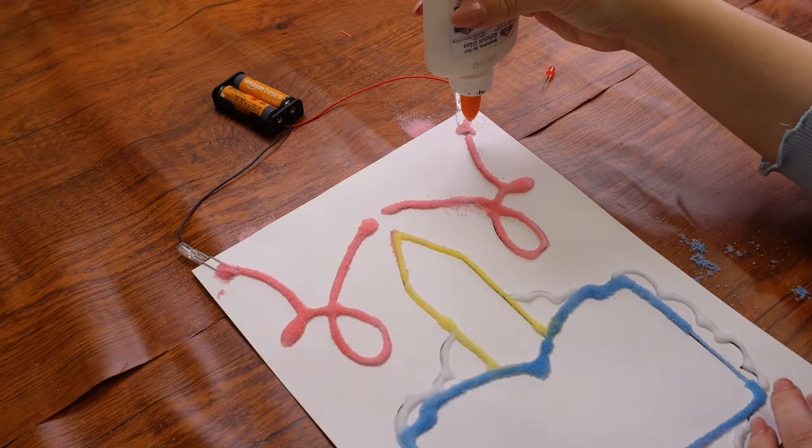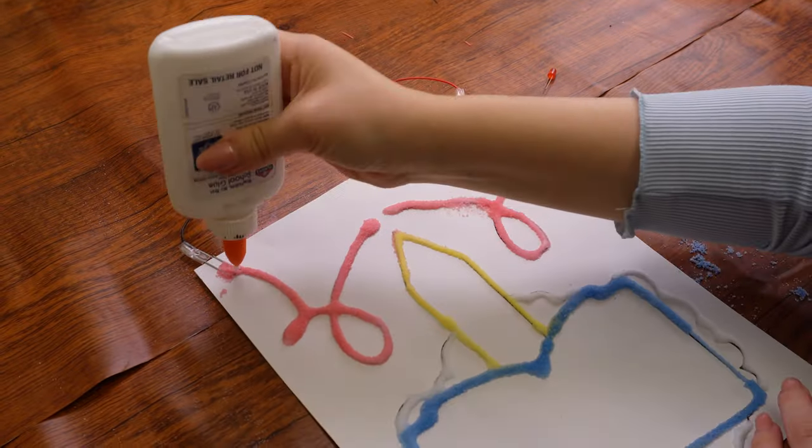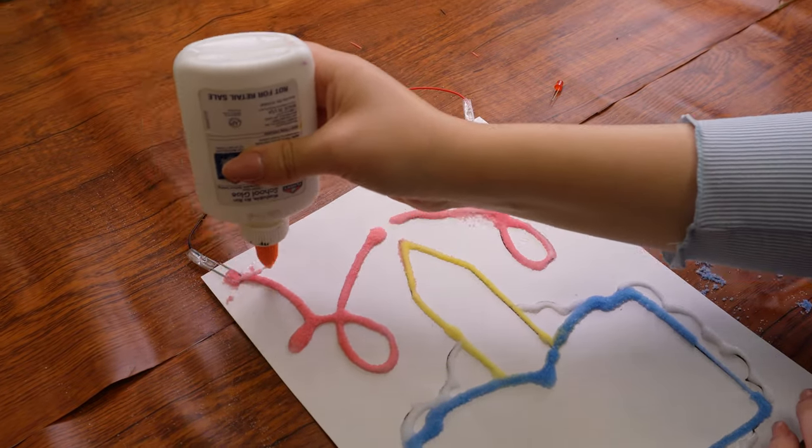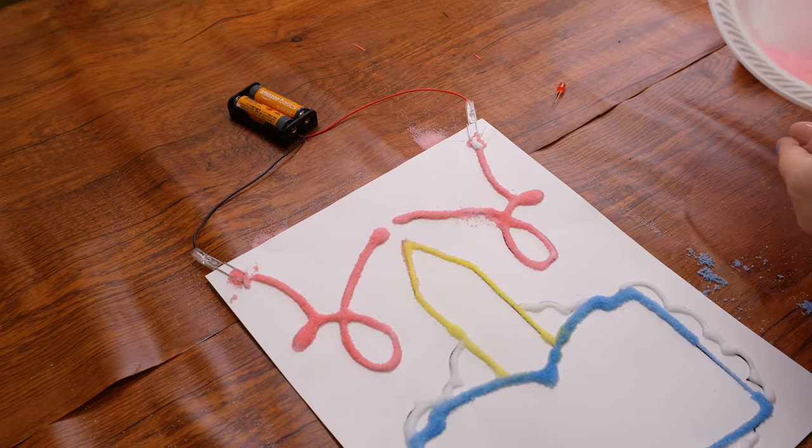Using glue, reinforce the place where the paper clip meets the paper. Pour or sprinkle more of the red salt onto this glue, disposing of the excess.